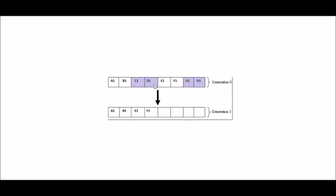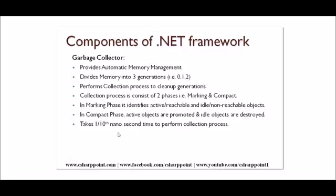For example, C1, D1, G1, and H1 are unreachable objects — they are marked and destroyed. A1, B1, E1, and F1 are reachable objects — the garbage collector promotes these to the next generation. After promoting, generation zero is completely available again for newly created objects. This process continues until the completion of generation two. One important point: all these operations take only one-tenth of a nanosecond, showing how fast the garbage collector is, reducing the memory management burden on the programmer.